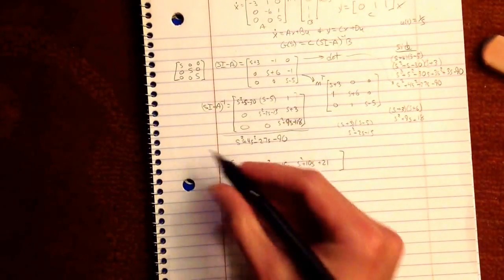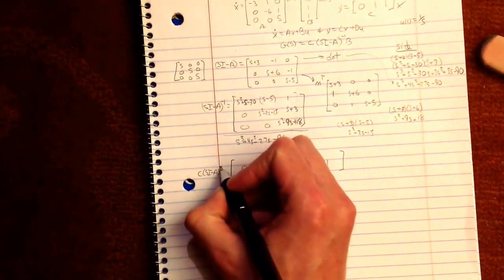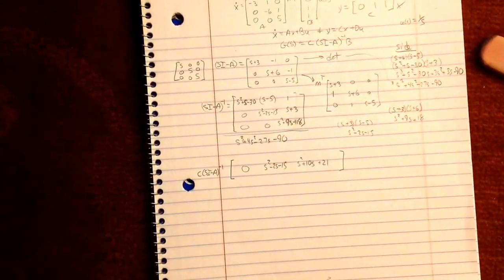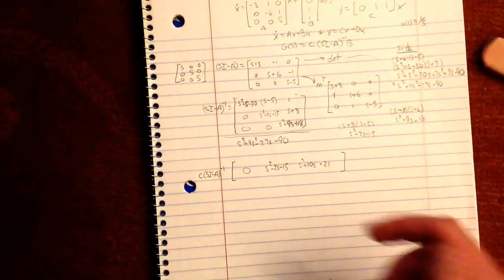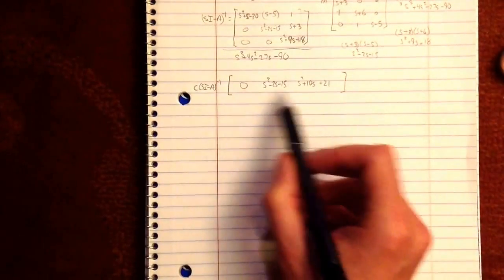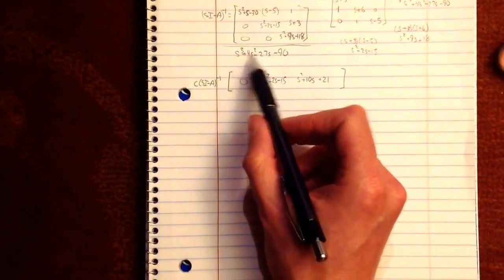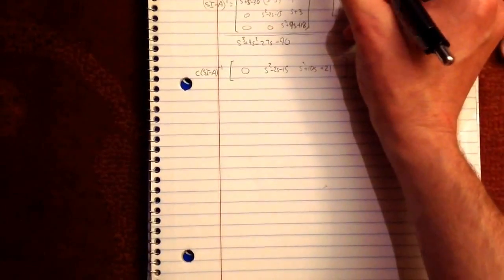Now you take this, which is now C S I minus A inverse. Oh, inverse. Sorry. And you have to multiply it by B. So you're going to get one single entity. Also, sorry. Everything here is divided by this. But it's easier if you just leave it out and put it in at the end. It will confuse you otherwise. So you know there's a step function.